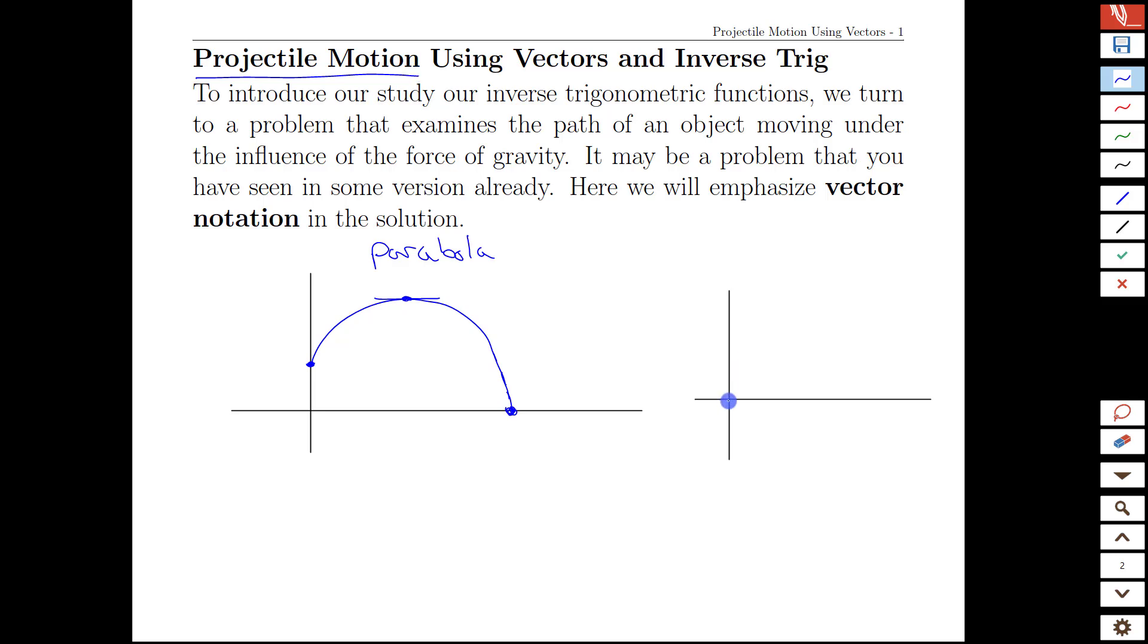Which is having a launch height - we're going to start from height zero - having a launch angle, and having a launch velocity known.